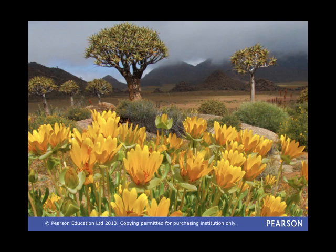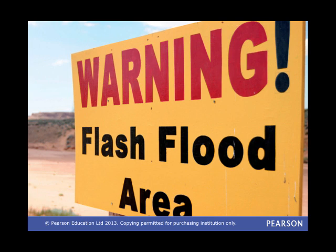For example, springtime can see arid regions transformed as all the plants suddenly flower. What rain does fall in arid regions often falls all at once in intense rainstorms that can produce flash floods. It is hard to predict when this could happen, and some years it might not happen at all.